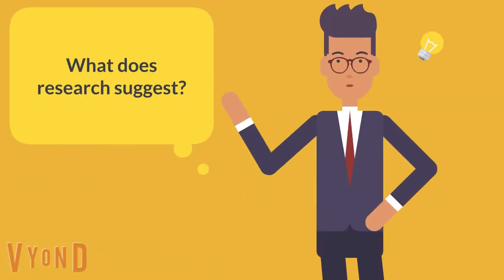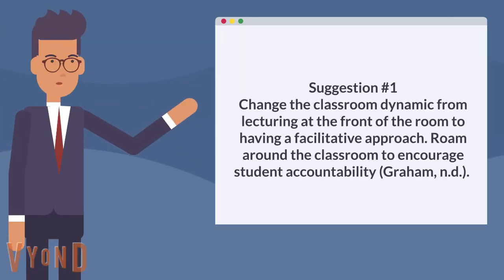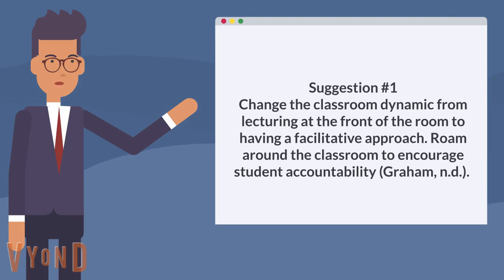What does research suggest about successfully implementing the use of cell devices in the classroom? Suggestion number one: change the classroom dynamic from lecturing at the front of the room to having a facilitative approach, and roam around the classroom to encourage student accountability.